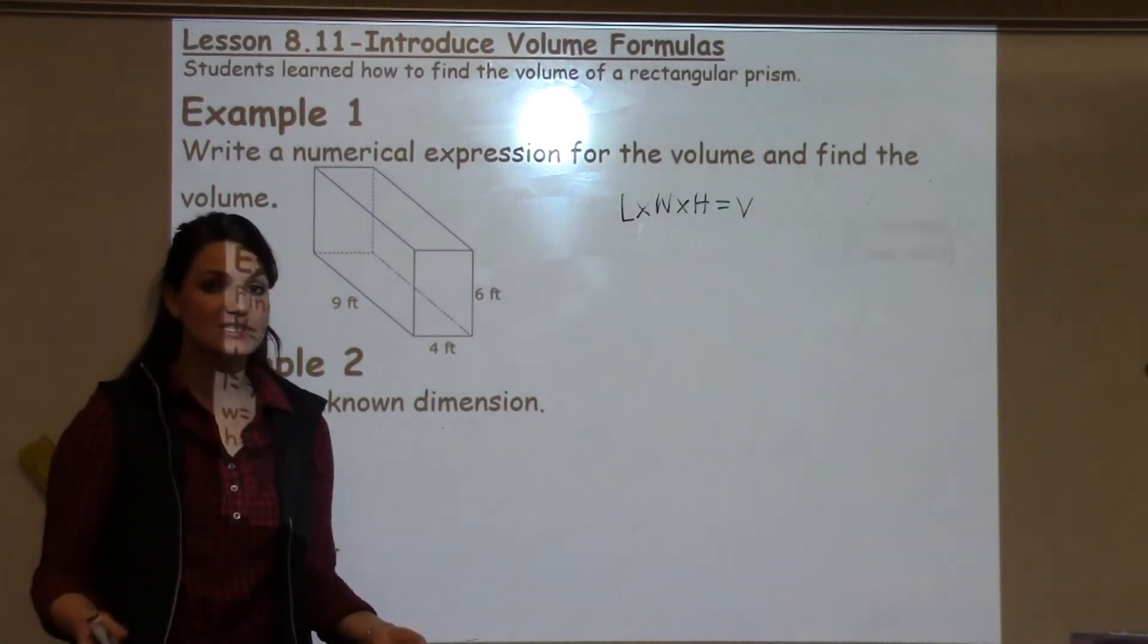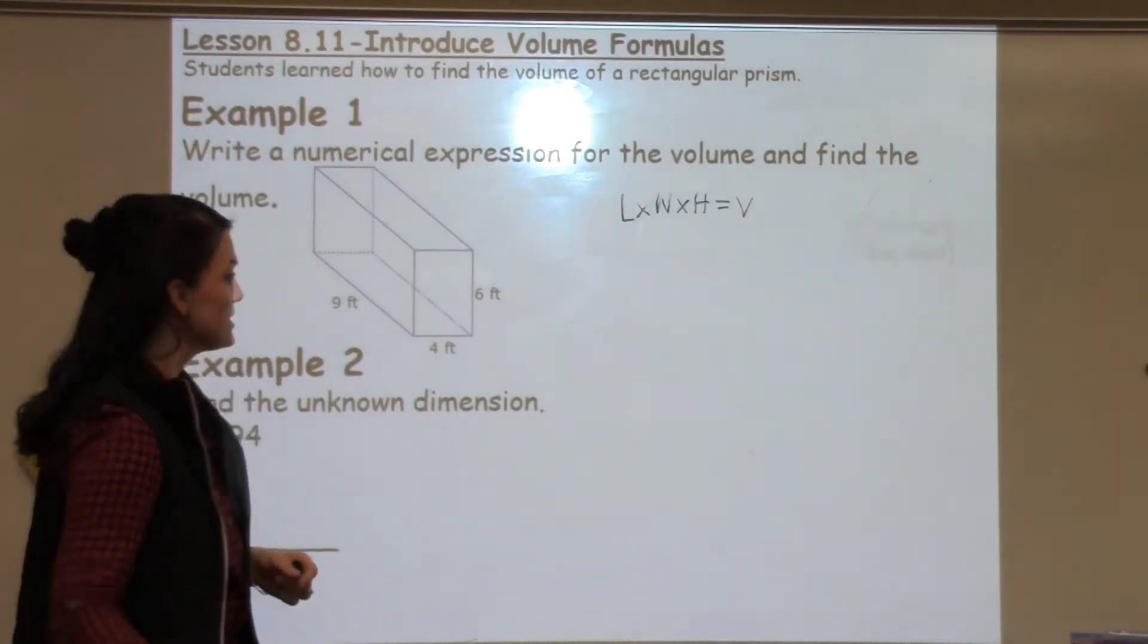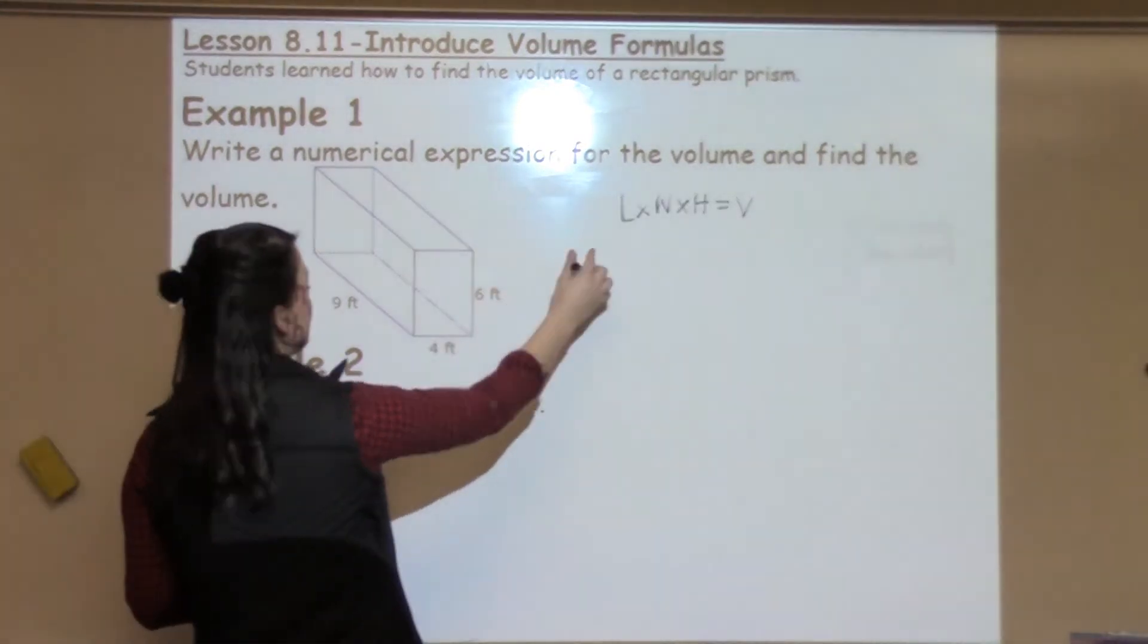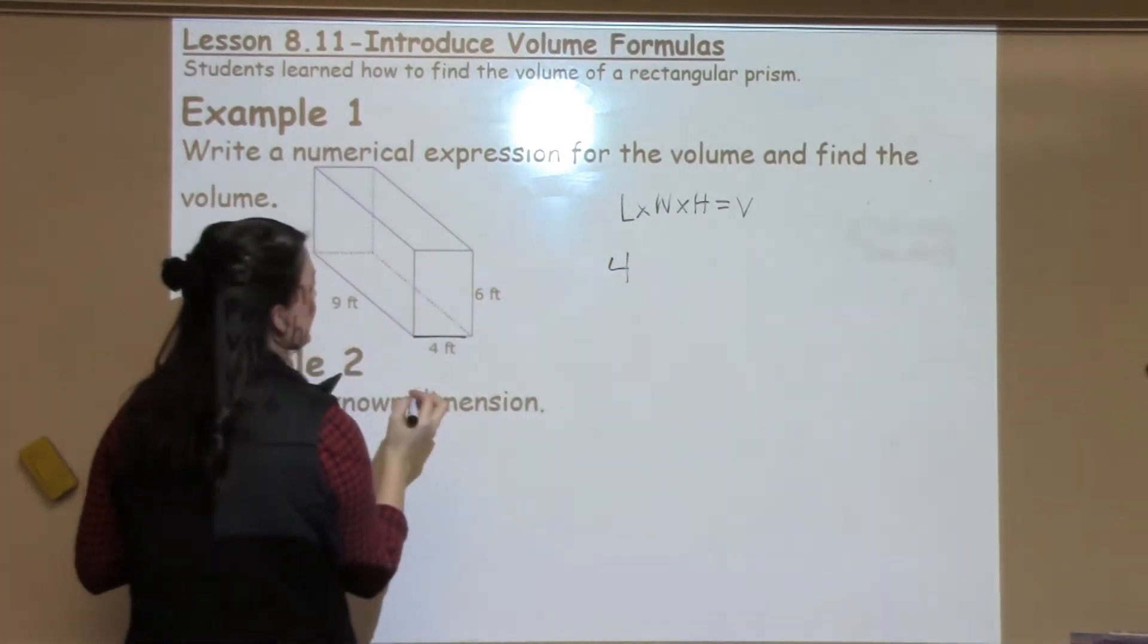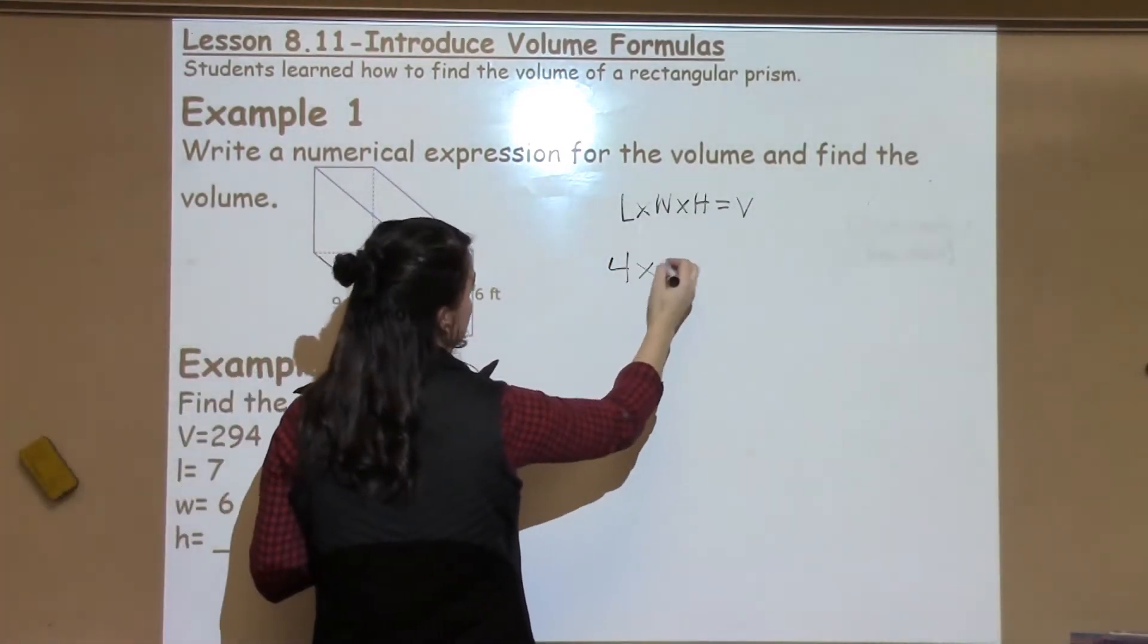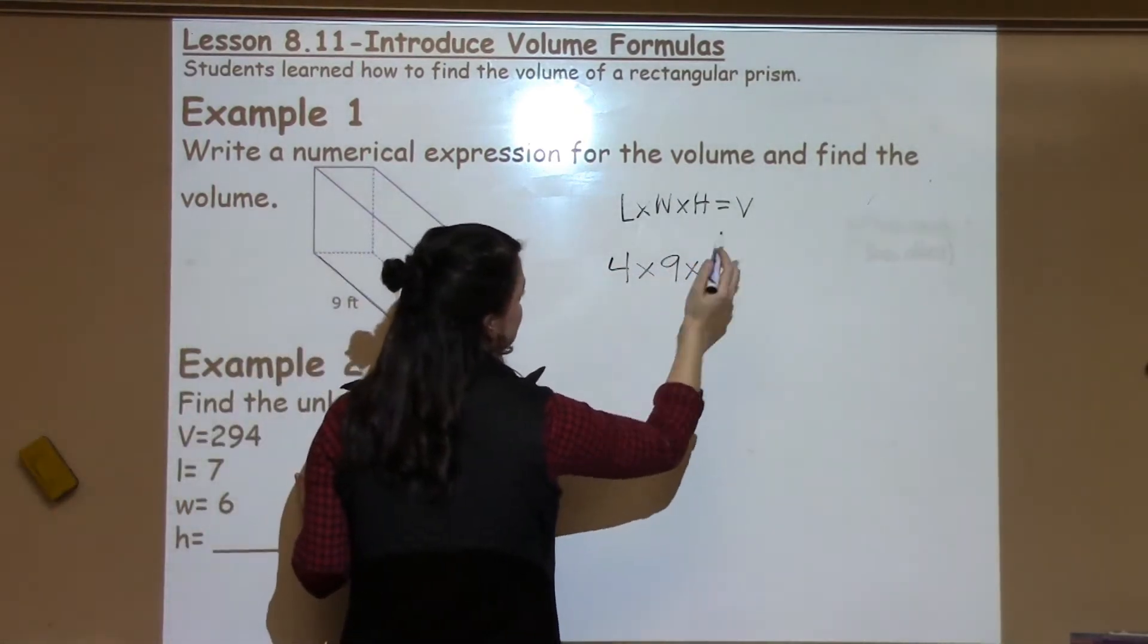So numerical expression seems like a really fancy thing but all it means is to write out the equation that we're going to use. We are going to take the length, which in this case is 4, times the width, which in this case is 9, and then times the height, which in this case is 6.